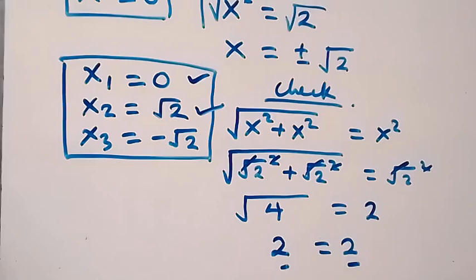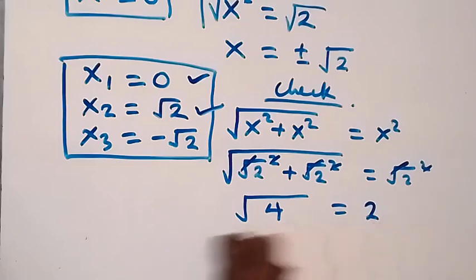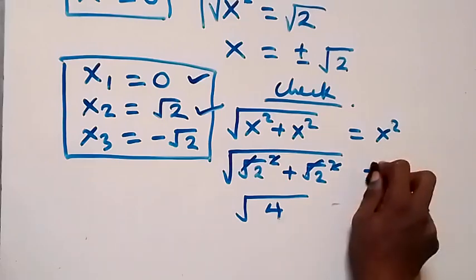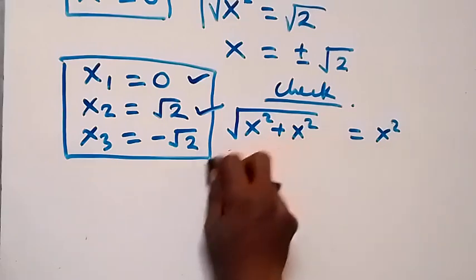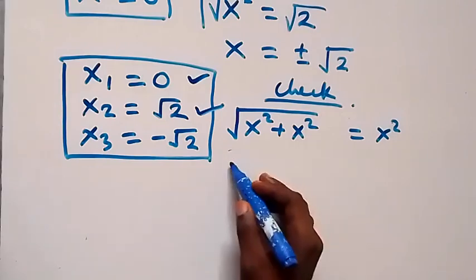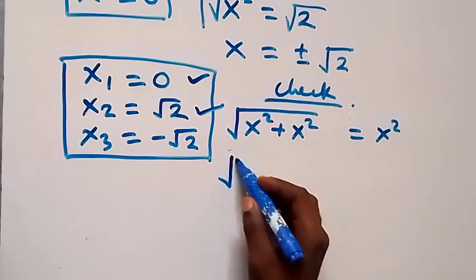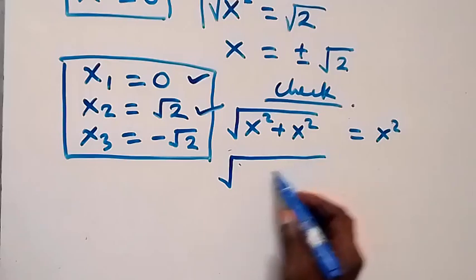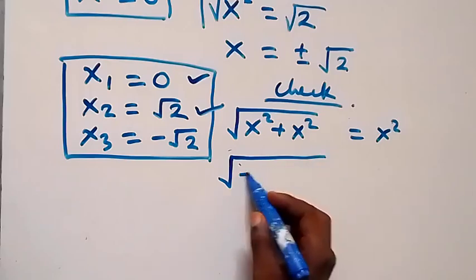Also for x = -√2, we substitute -√2 into the equation.